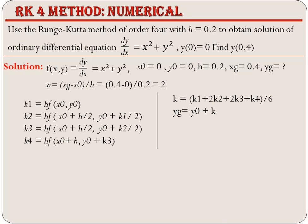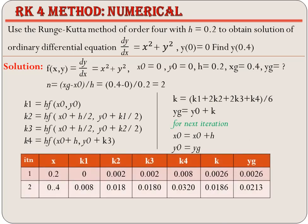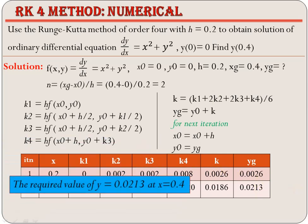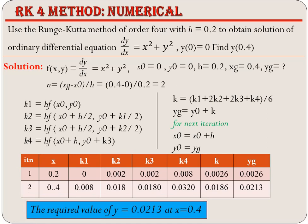If there are more iterations, for the next iteration x0 becomes x0 plus h and y0 becomes yg. These steps are repeated for the given number of iterations. By putting different values of x, y, and h we get the solution in tabulated format showing x, k1, k2, k3, k4, k, and yg for each iteration. The required value of y is 0.0213 at x equal to 0.4.